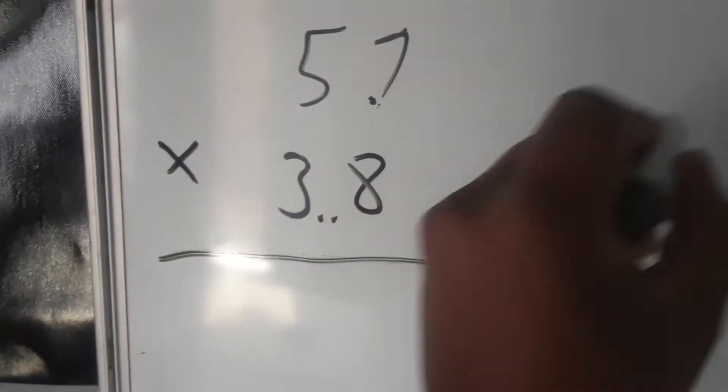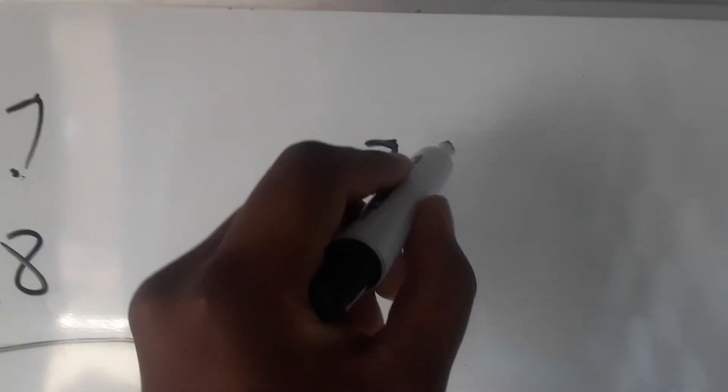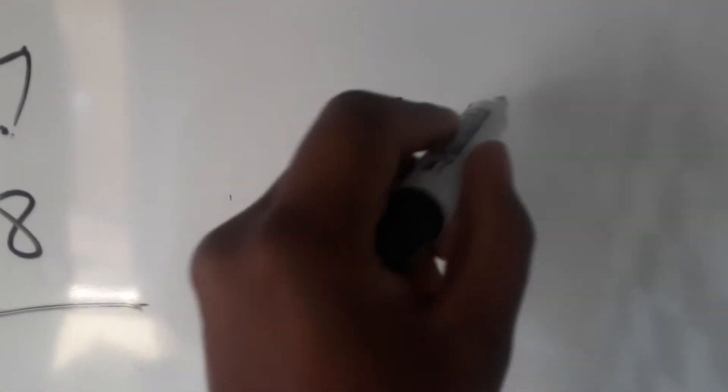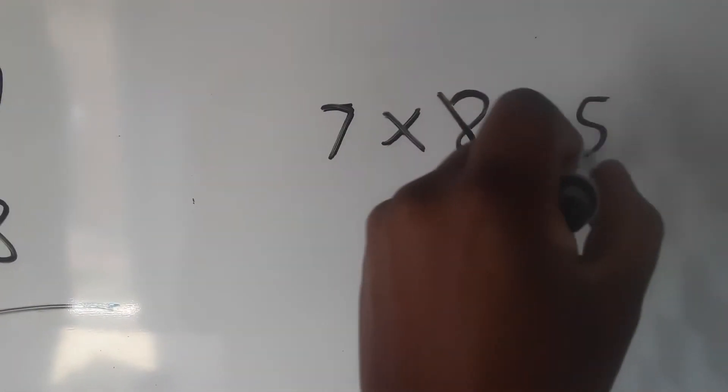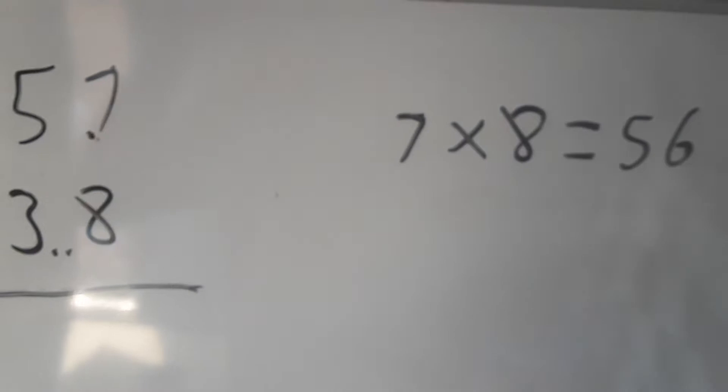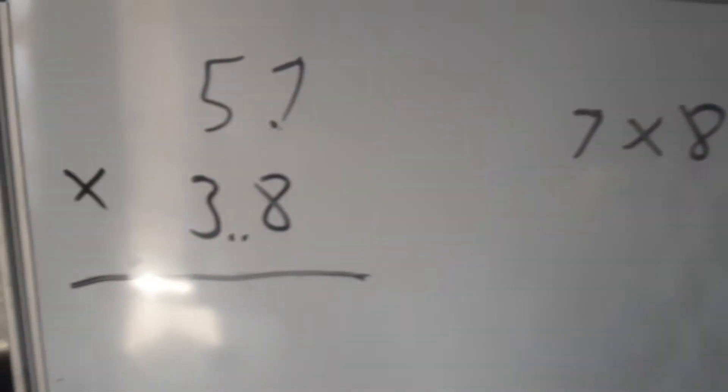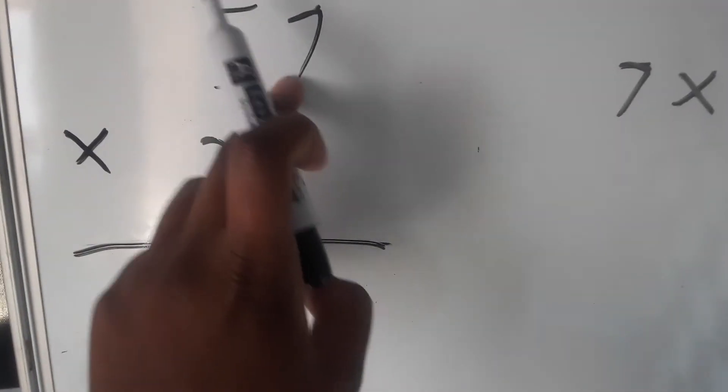We'll first say 7 times 8, which is gonna be equals to 56. 7 times 8 is 56, you must know your multiplication.